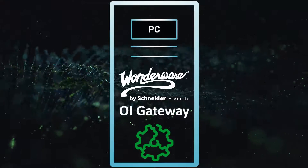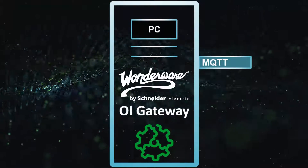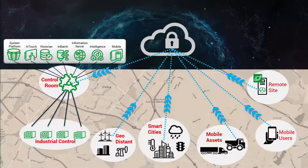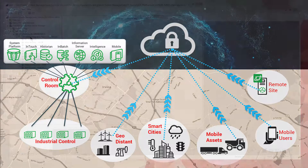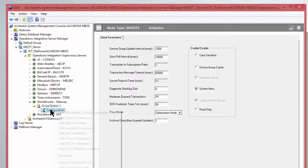Today we'll be talking about Wonderware OIGateway and MQTT, another one of those Internet of Things protocols. Specifically, we want to show the use case of how to bring data from Internet of Things devices out in the field into the Wonderware System Platform and a control room. Let's start by showing how to leverage the OIGateway to do this.